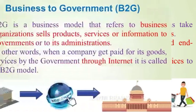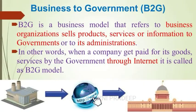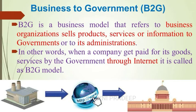The next category is business to government. Business to government is a business model where a business organization sells products, services, or information to governments or their administrations. In other words, when a company gets paid for its goods or services by the government through the internet, it is called the business to government model. For example, a government buys laptops for students from a business.